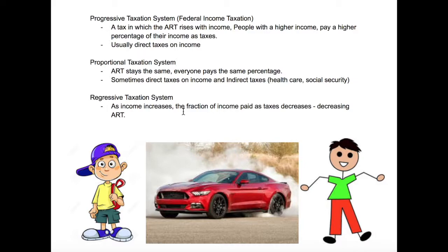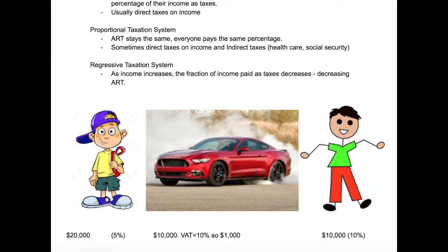With regressive taxation, as your income increases, the fraction of income paid as taxes decreases — so you have a decreasing average rate of taxation. The best way to understand this is with an example: there are two people and they both want to buy a car. The car costs ten thousand dollars before value added tax, and with a ten percent tax, you have to pay an additional thousand dollars.